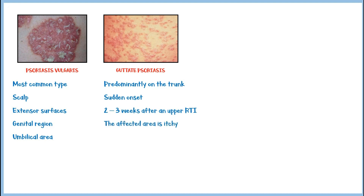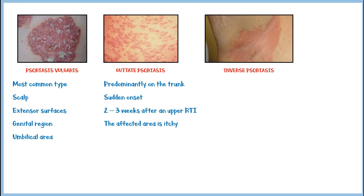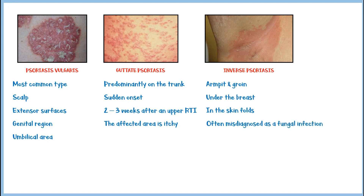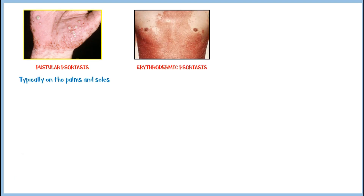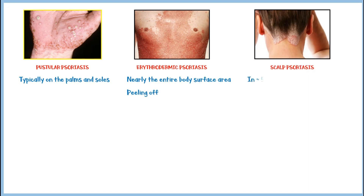In addition, the affected area in guttate psoriasis will be itchy. Inverse psoriasis occurs in flexural surfaces like the armpit and groin, under the breast, and in the skin folds. This type of psoriasis is often misdiagnosed as a fungal infection. Pustular psoriasis is characterized by the presence of pustular lesions, typically on the palms and soles. Erythrodermic psoriasis involves nearly the entire body surface area with red skin and peeling off. Scalp psoriasis involves the scalp and the area back of the ears, and it accounts for about 50% of the cases of psoriasis.